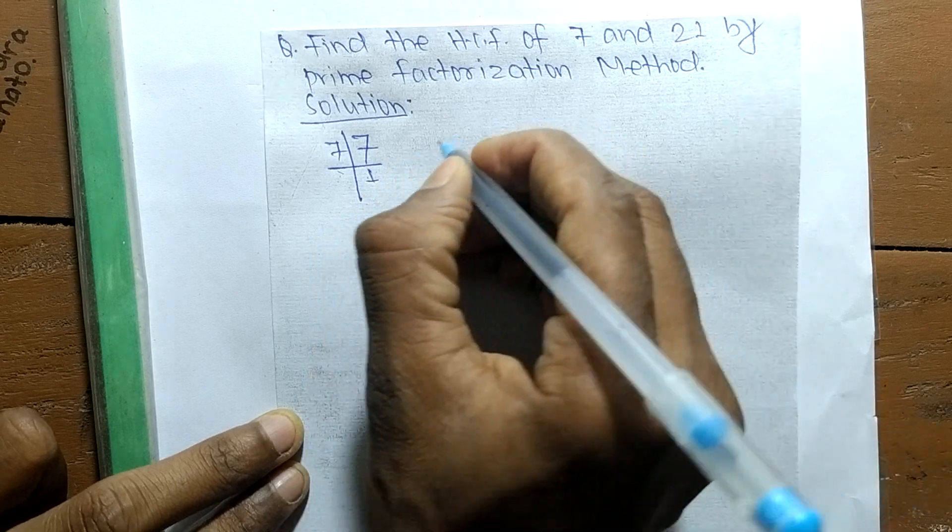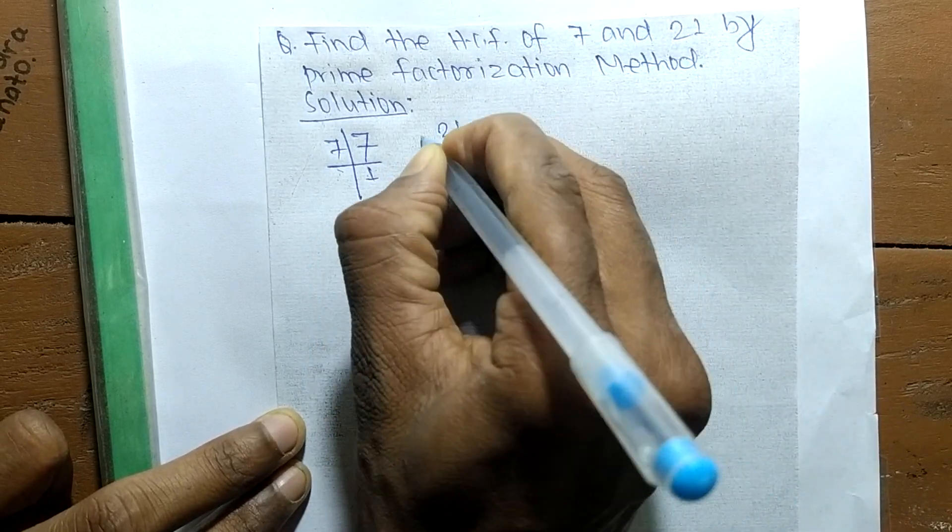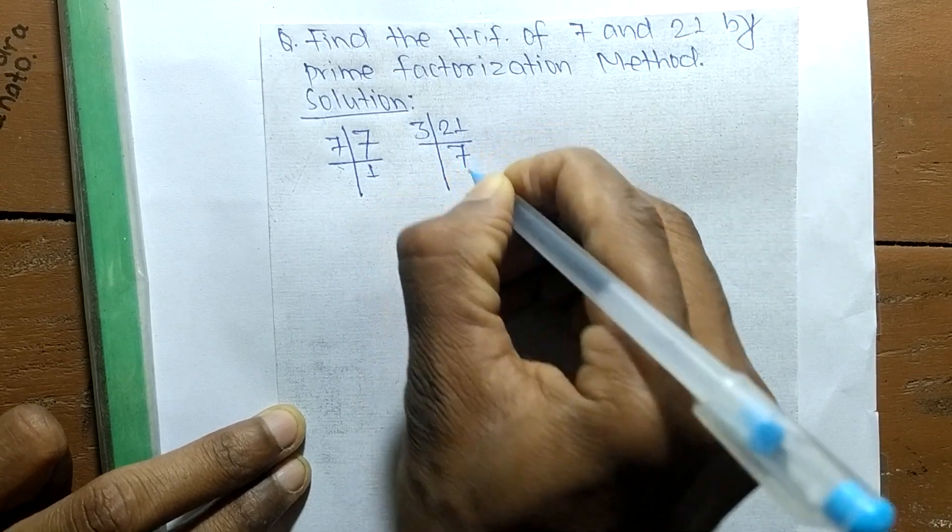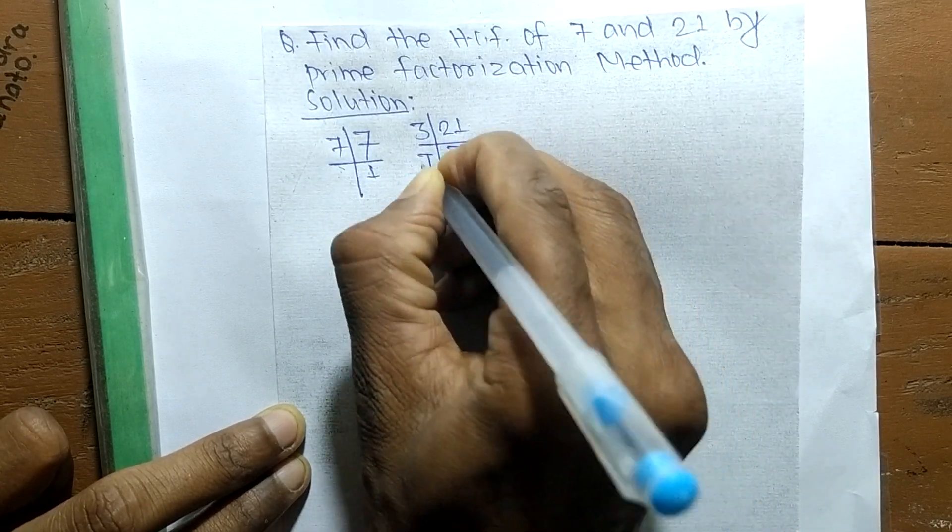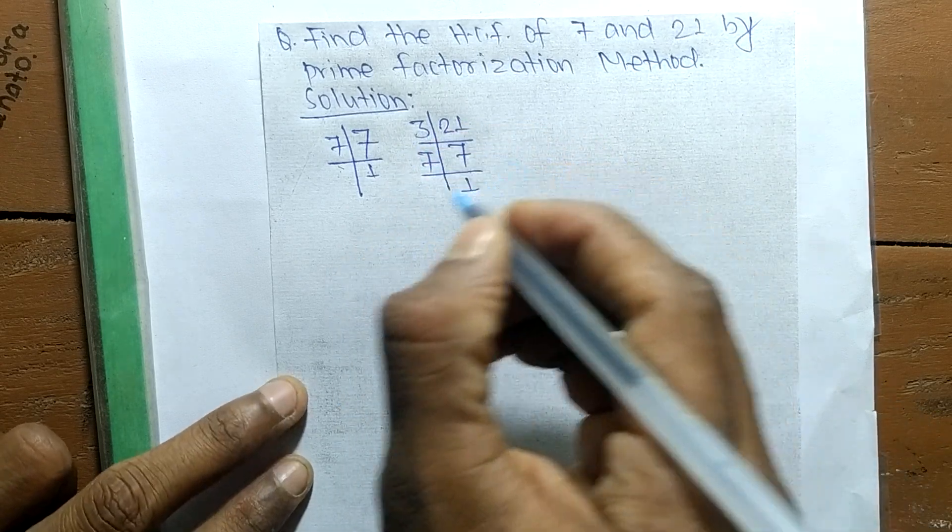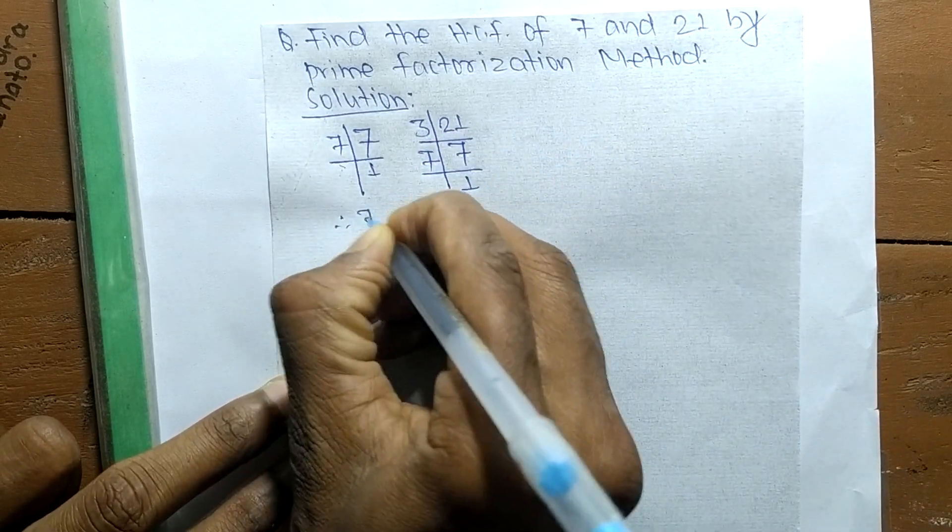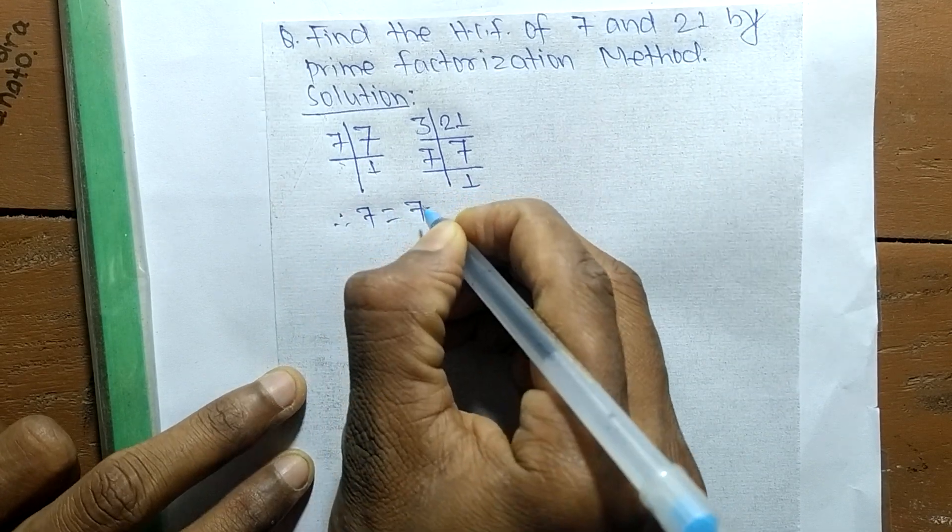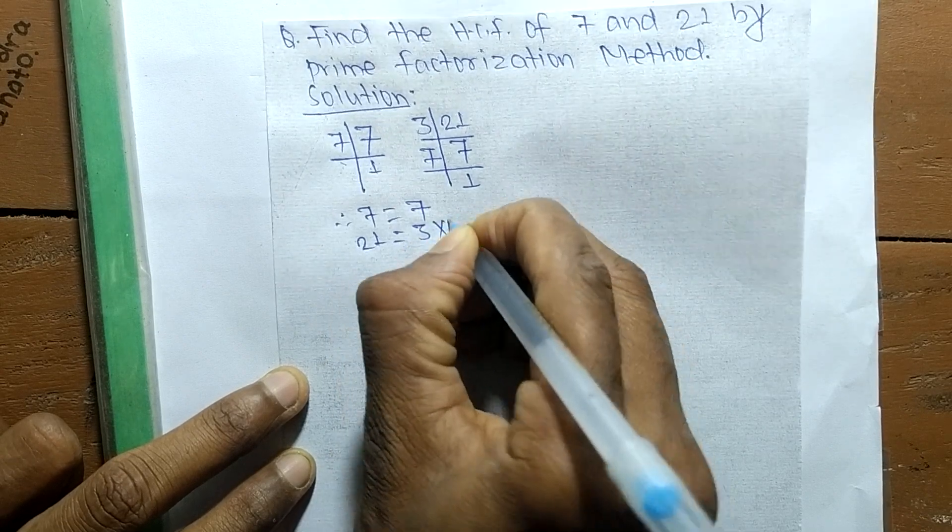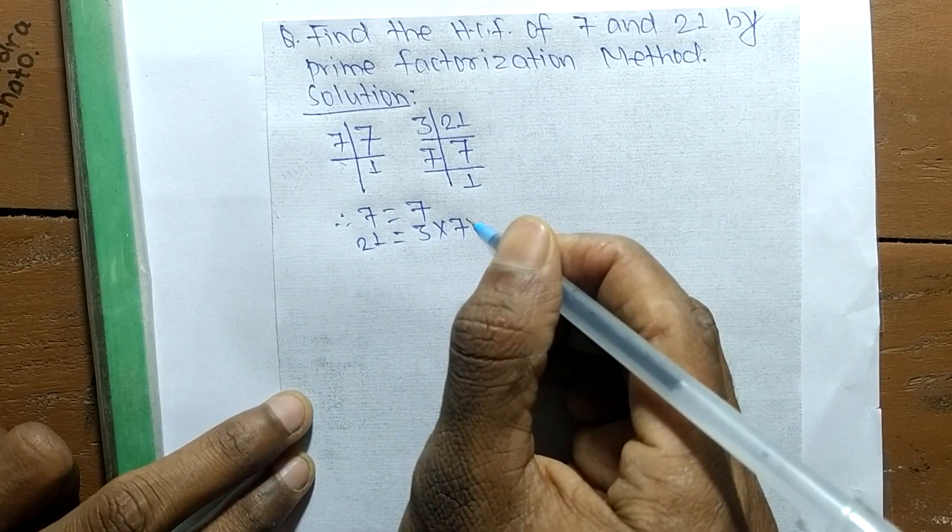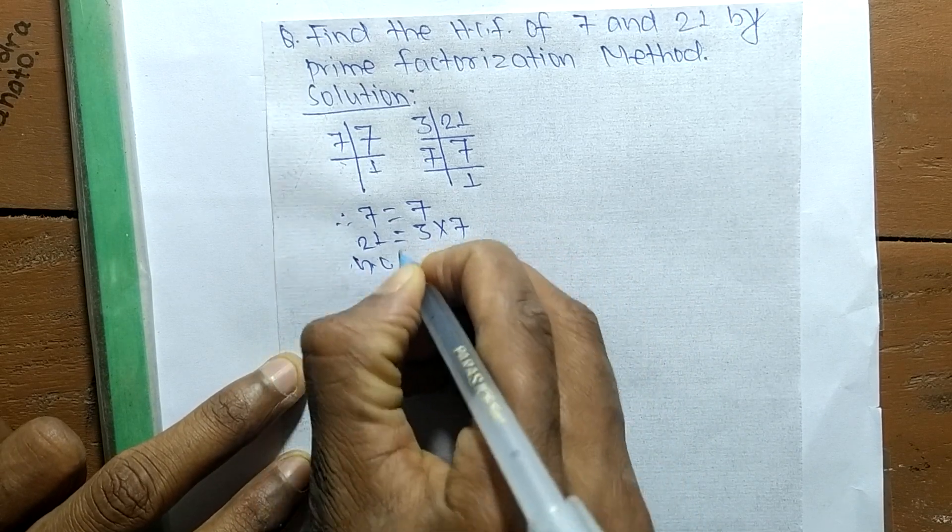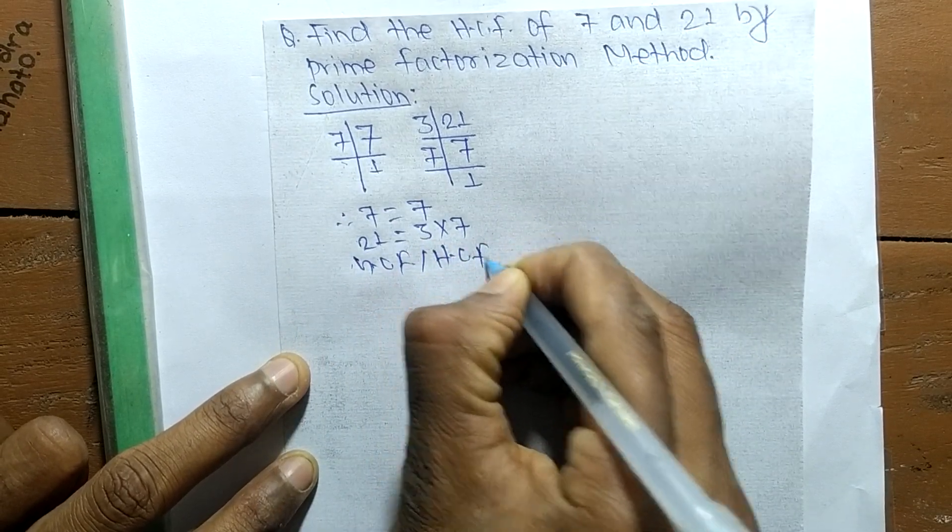The prime factors of 21 is 3 times 7, which means 21. And 7 times 1 means 7. From these prime factors we can write 7 equals 7, and 21 equals 3 times 7. Now we have to find its GCF or HCF.